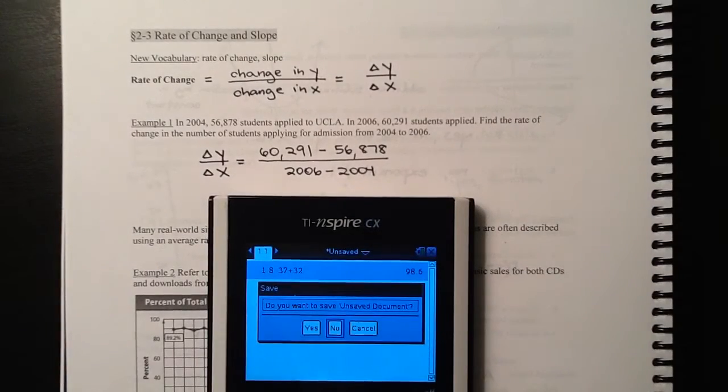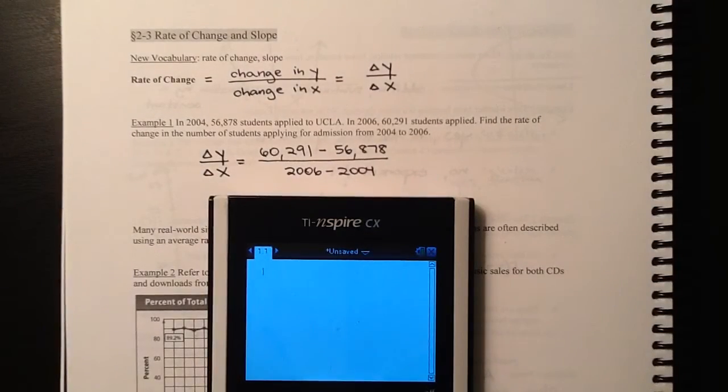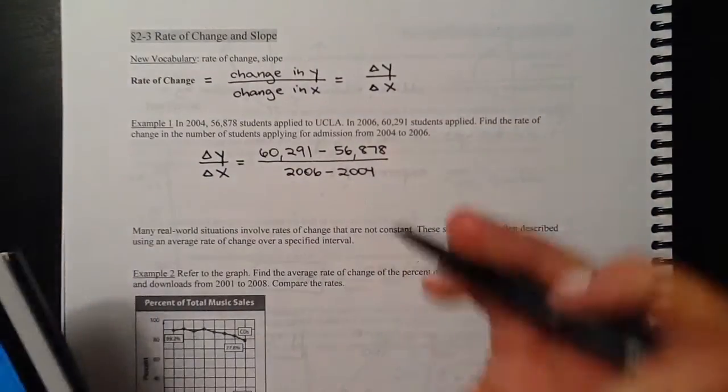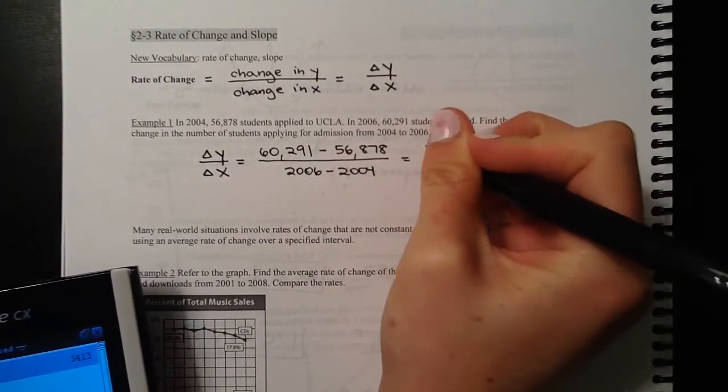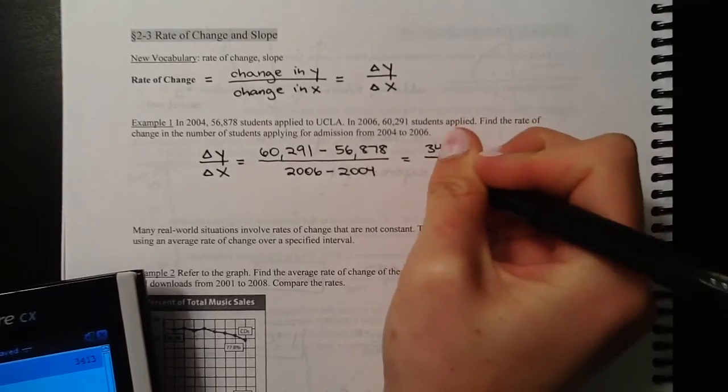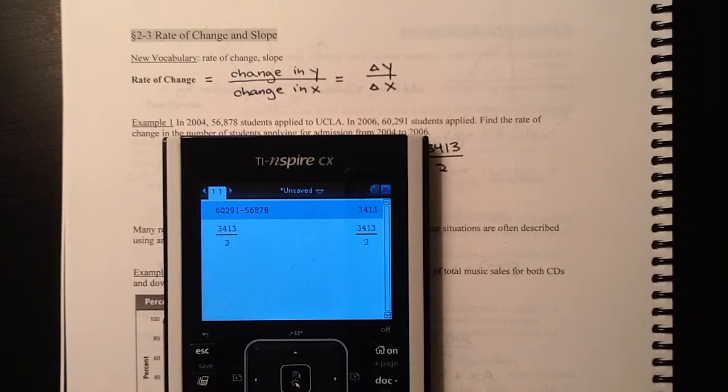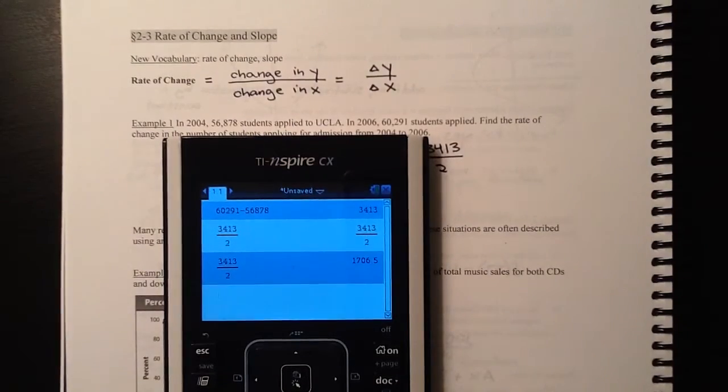So calculator page, 60,291 minus 56,878. So over the course of two years, there was an increase of 3,413. And then of course, this is a change in two years. So when we take that number that we just got and divide it by 2, we get, oh well, that's a fraction form. Let's try that again. There we go.